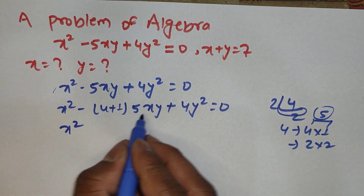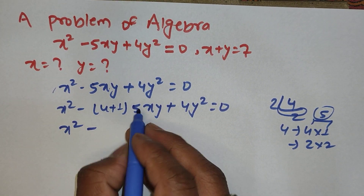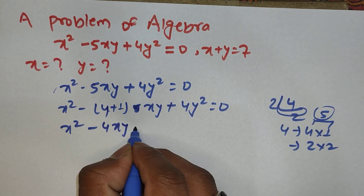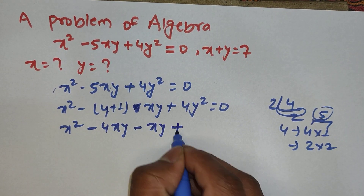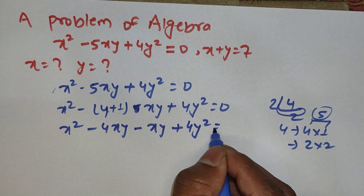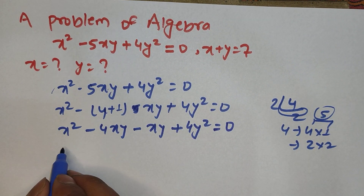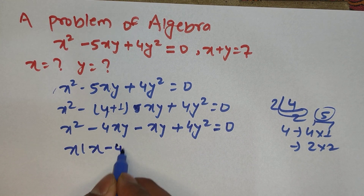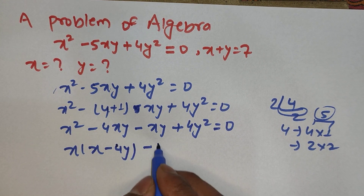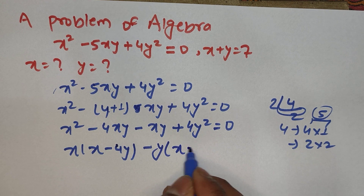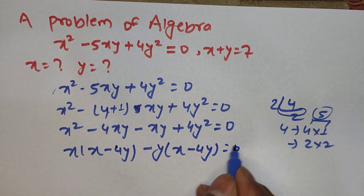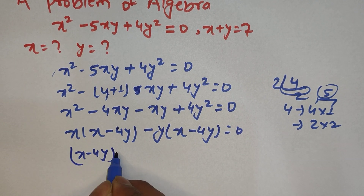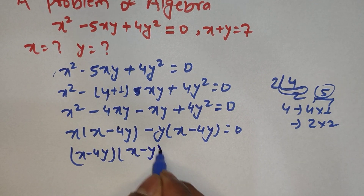Opening the bracket by multiplication, we get x² minus 4xy minus xy plus 4y² equals 0. From here we can take x as common, remaining with x minus 4y, and from the second group we take y as common, remaining with x minus 4y equals 0. So taking x minus 4y as common, we are left with x minus y equals 0.